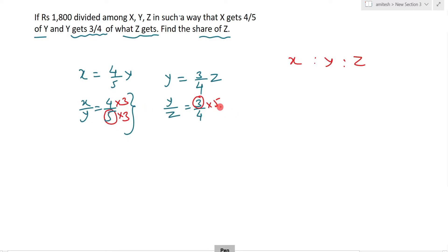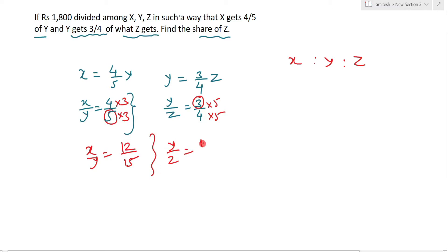Numerator में 5 से किए तो denominator में भी 5 से multiply करोगे। तो ultimately X:Y = 12:15 और Y:Z = 15:20। Y की value दोनों में equal है, तो X = 12, Y = 15, Z = 20।